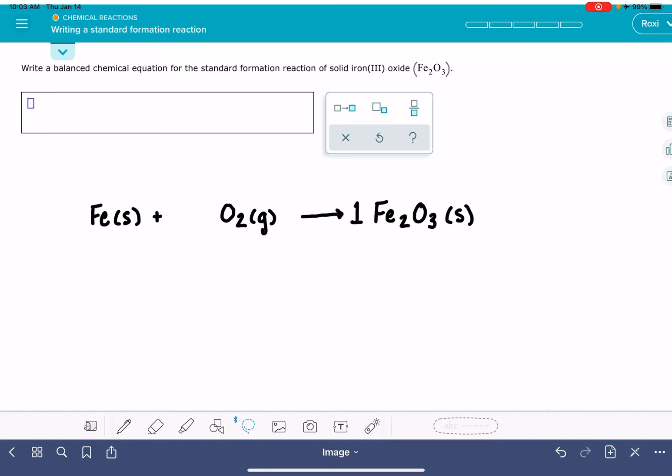So the last thing that we have to do is balance this chemical equation, but we're not just balancing it the way that we would normally balance equations, because we are restricted over here with this stoichiometric coefficient of 1. We can't change this coefficient at all. So we have to come up with coefficients for the iron and the O2 that are going to make this equation balance when we have this stoichiometric coefficient of 1.